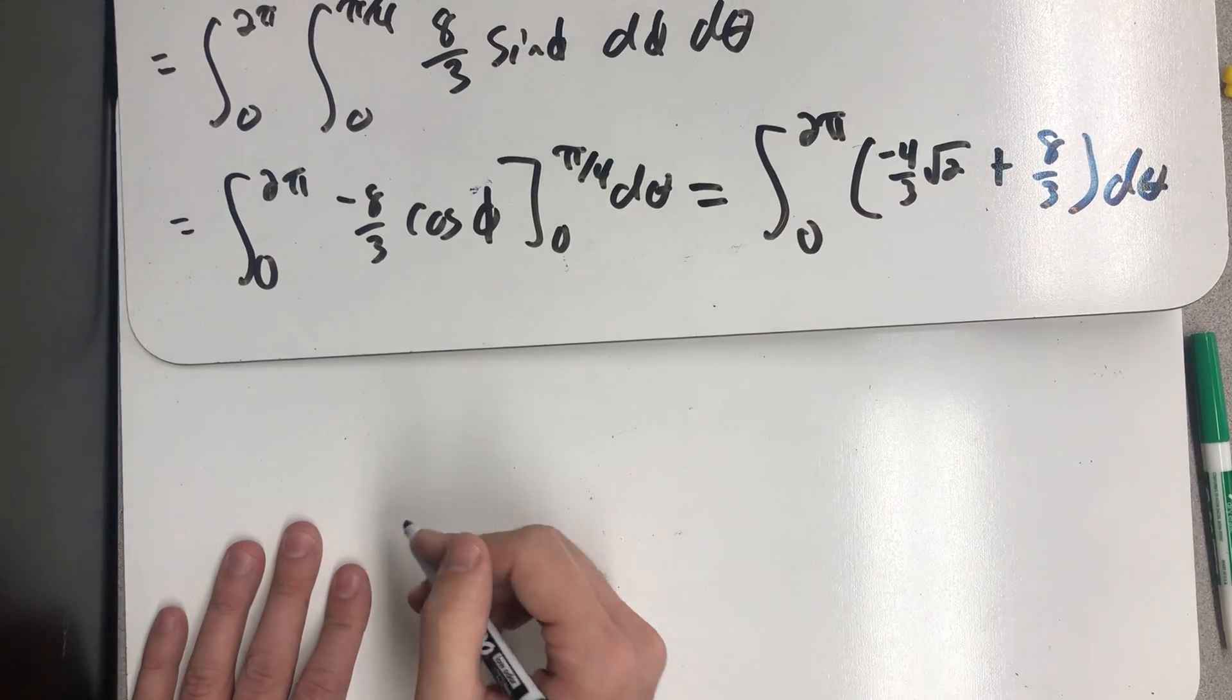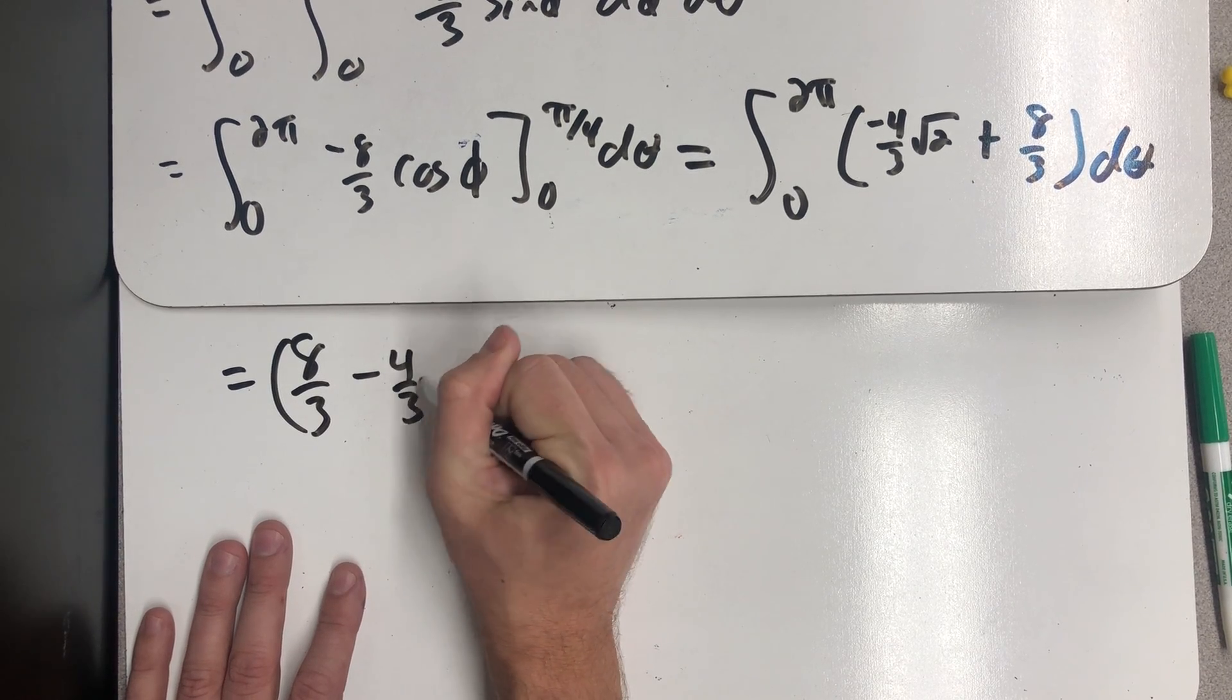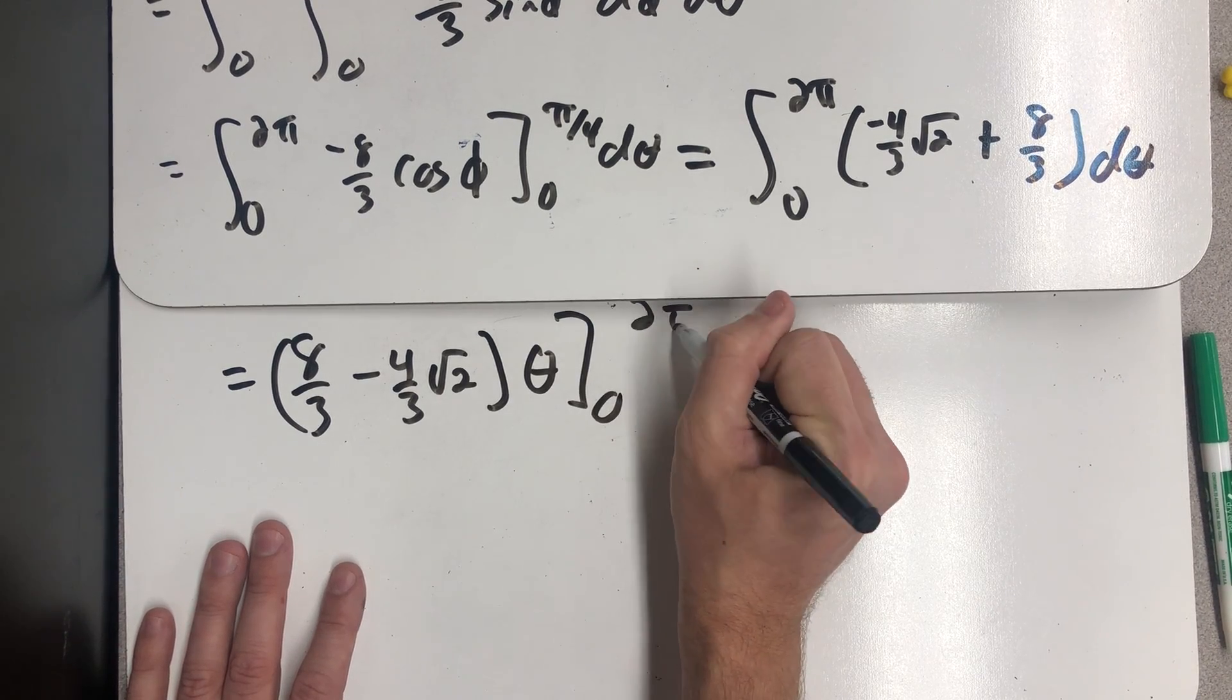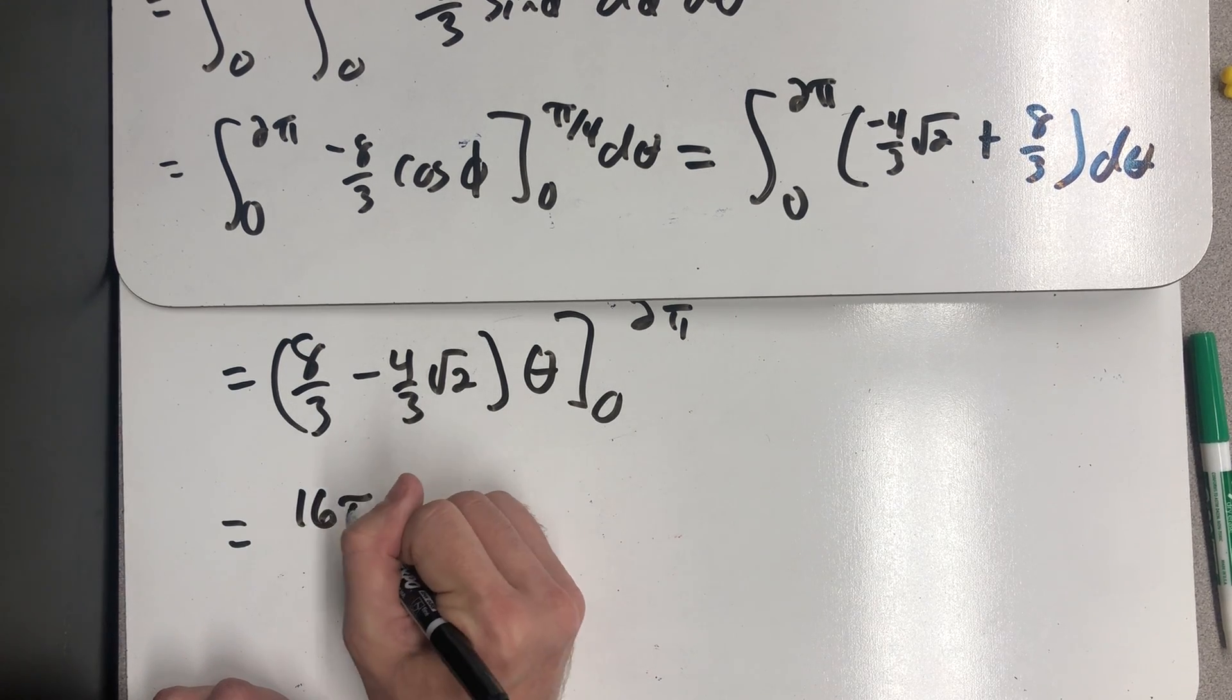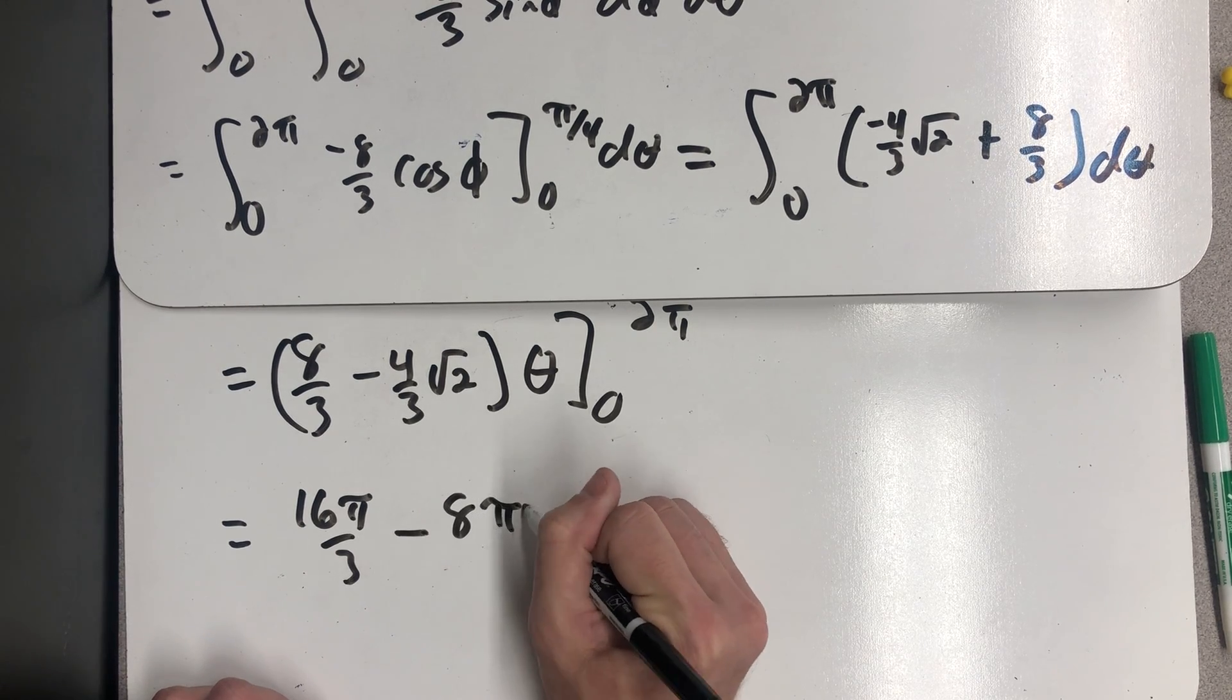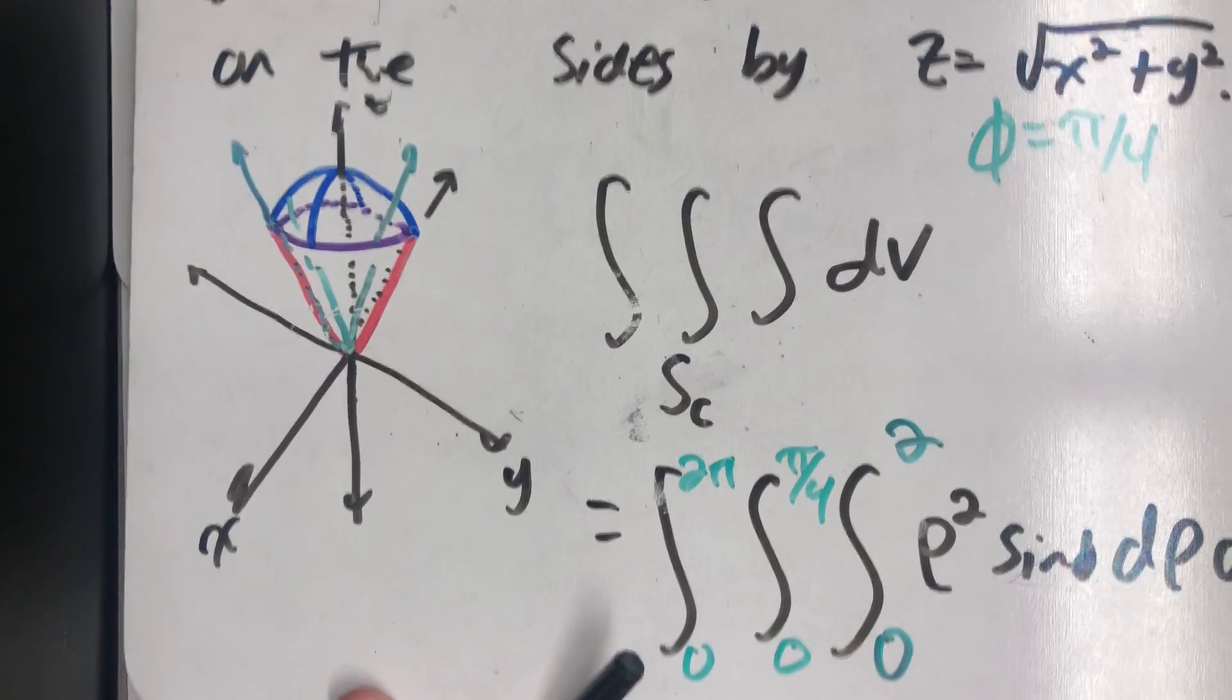Well, evaluating that, that would be 8 thirds minus 4 thirds times the square root of 2 times theta evaluated from 0 to 2 pi. So I end up with 2 pi times this, so that would be 16 pi over 3 minus 8 pi times the square root of 2 all over 3. That's the volume of our snow cone in space.